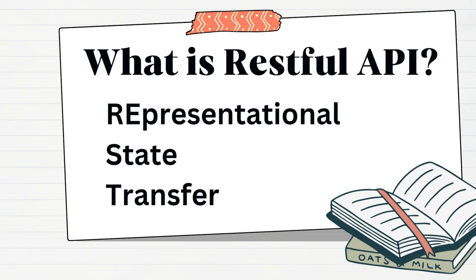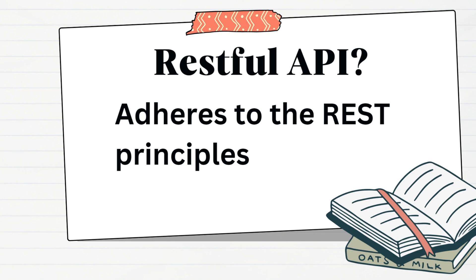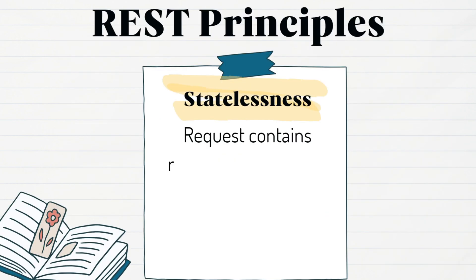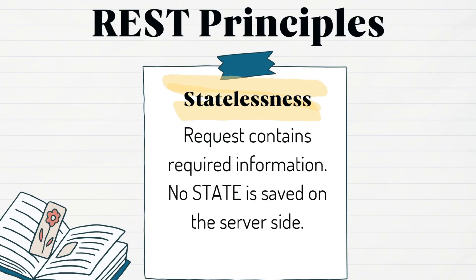Now let us understand what is a RESTful API. REST stands for Representational State Transfer. The term representational refers to the idea that resources are represented in a specific format when they are transferred between a client and server. A REST API is one that adheres to the REST principles. The first principle is statelessness — each request from a client to server must contain all the information needed to understand and process the request. The server does not store any state about the client session on the server side. State can be a user detail or session information.